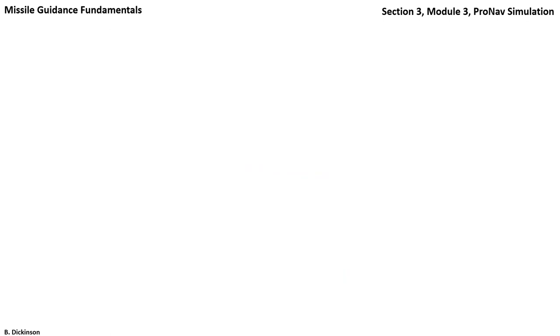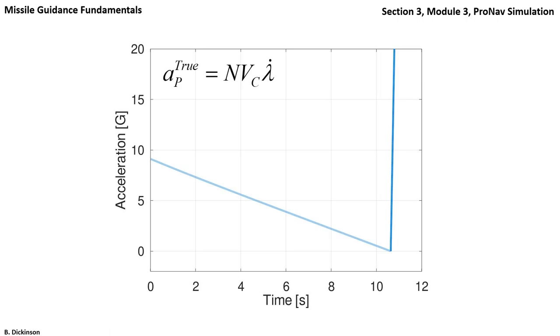At each time step in the simulation, the true ProNav command is updated. If we plot acceleration versus time, we get this curve.